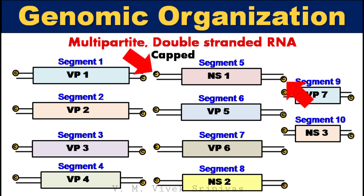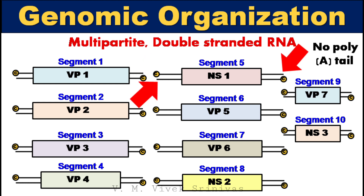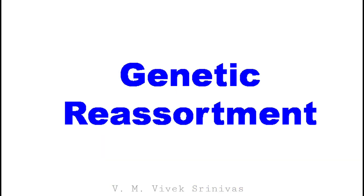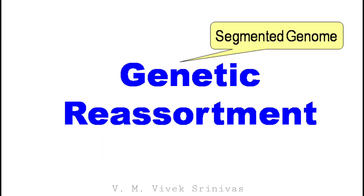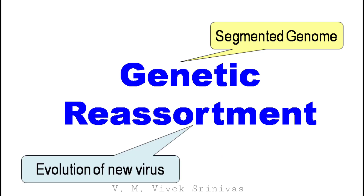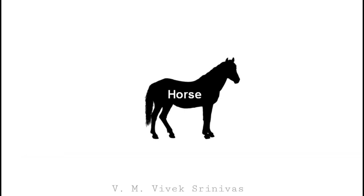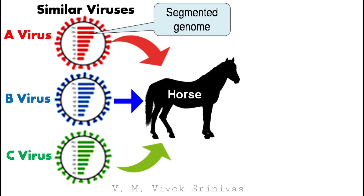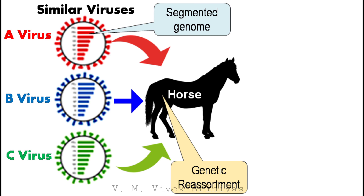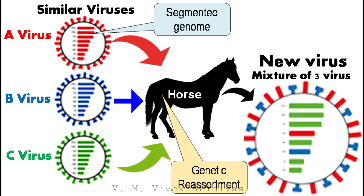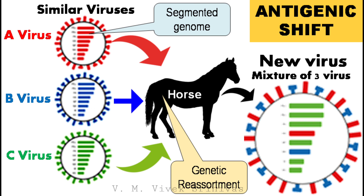The 5' end is methylated, that is capped, and the 3' end has no poly-A tail. As already discussed, the segmented genome may result in genetic reassortment, which may lead to evolution of new viruses. If a horse is infected with three similar types of viruses but different serotypes at the same time, due to reassortment of segments — that is genetic recombination — there may be evolution of a new virus that may be a hybrid of the three viruses. This type of major change in the virus is called an antigenic shift.